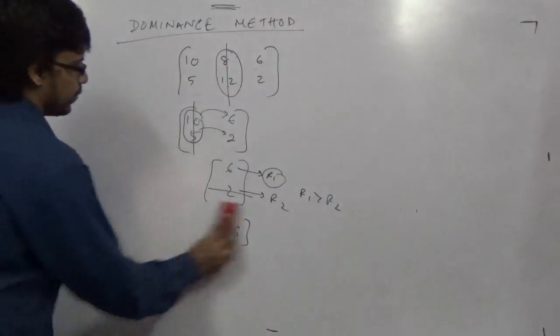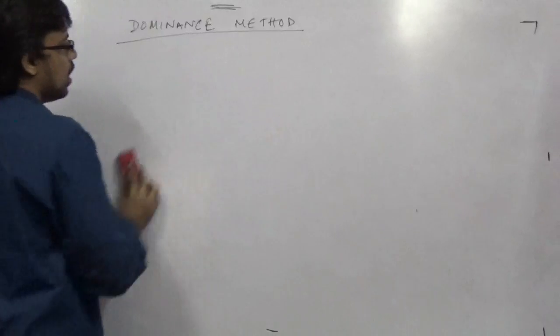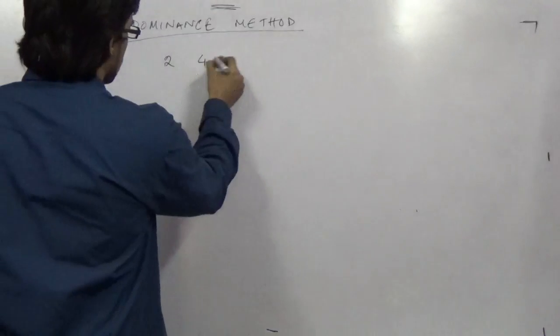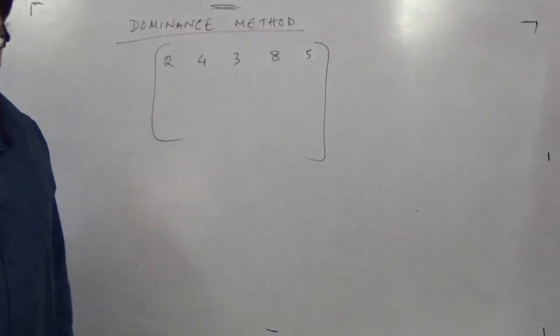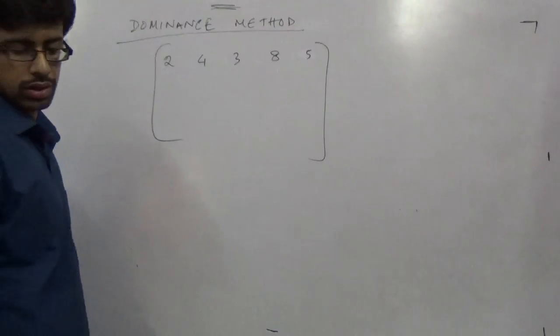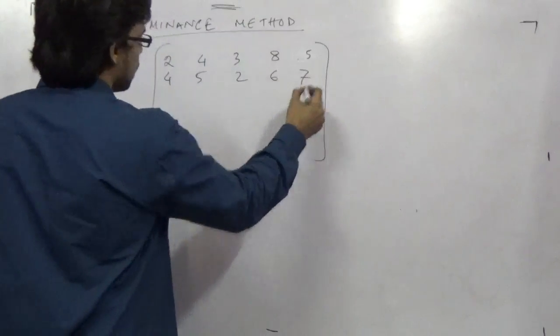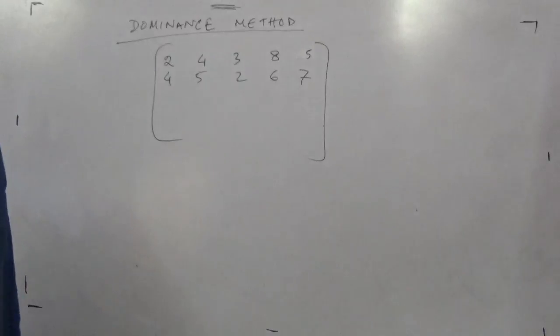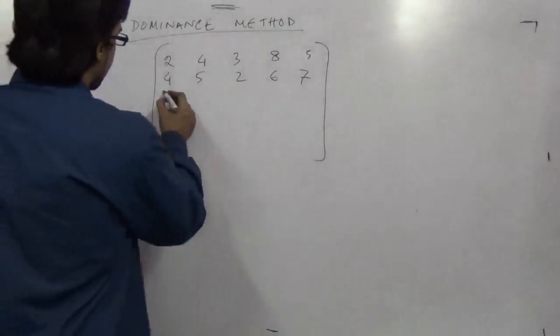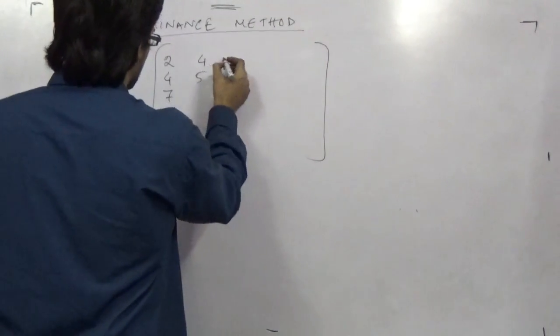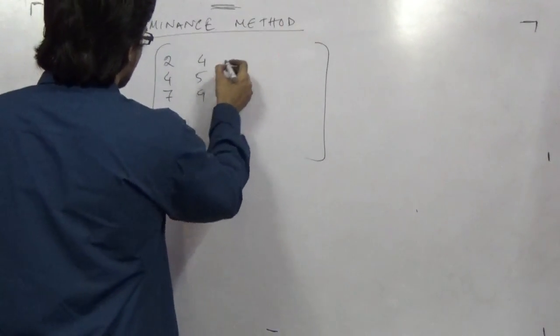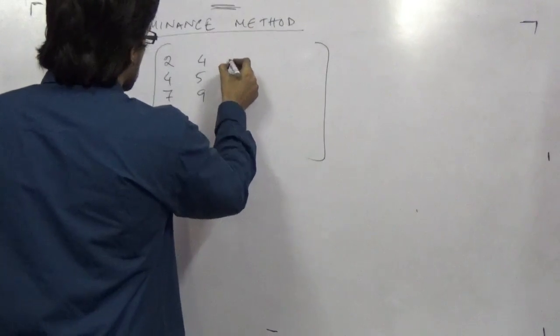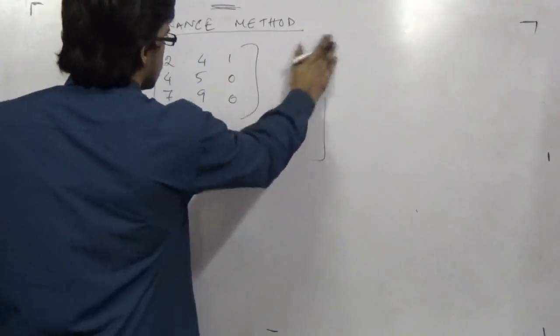But what happens if the dominance is relatively bigger? Now comes our second example of a bigger dominance. That bigger dominance is a matrix with values 2, 4, 3, 8, 5; 4, 5, 2, 6, 7; and 7, 6, 8, 7, 6. Or let me give a smaller one: 1, 2, 4; 4, 5, 7, 9; and 1, 0, 0. This will be easier for you to do, then I will go to the larger ones.